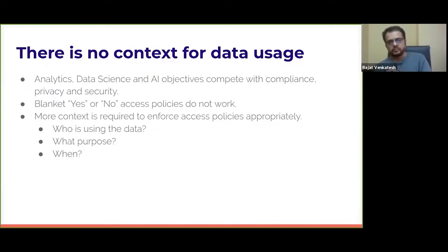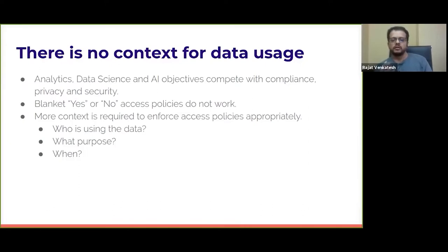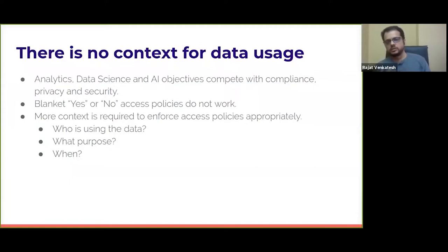It's not enough information on its own. The information you need is: who is using the data, for what purpose, and when. You need this triad of information to make intelligent decisions about whether the data is being used appropriately or not. These are the three different problems I saw when helping companies meet their goals in security, compliance, and privacy.